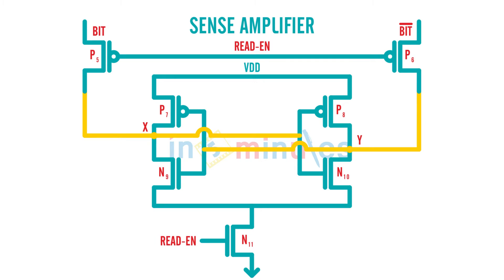Now what's going to happen is very simple. When read enable is equal to 0, my P5 and P6 both are on. When both are on, they will pass bit voltage to X and bit bar voltage to Y. At that same point of time, because N11 is off, what's going to happen is there is no direct path to ground.